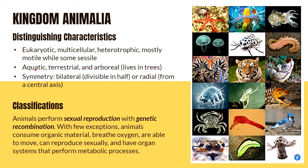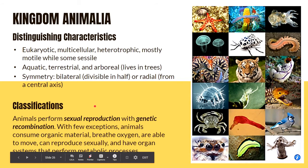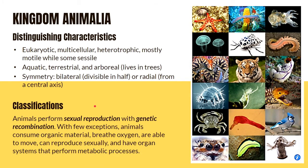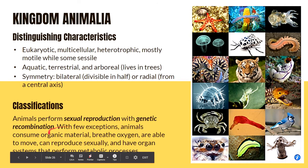Animals follow bilateral symmetry — their body plan allows them to be divided in half and each side is a mirror image of the other. We also have radial symmetry, as seen in sea stars, which radiate from a central axis. Animals perform sexual reproduction, which is very important for genetic recombination. With few exceptions, animals consume organic material, breathe oxygen, and are able to move.